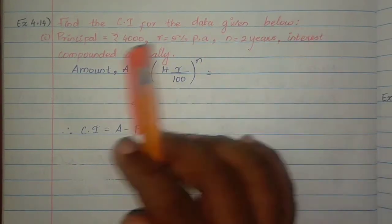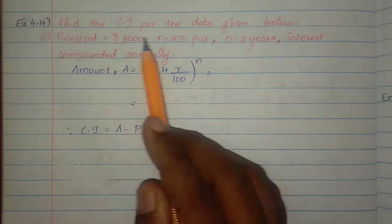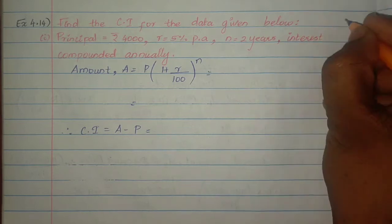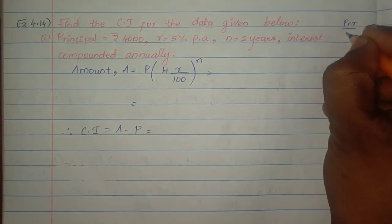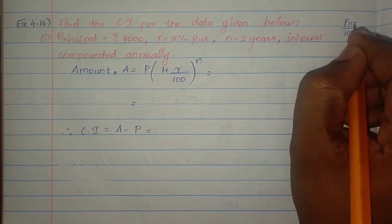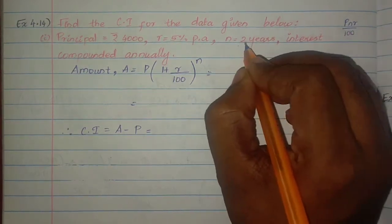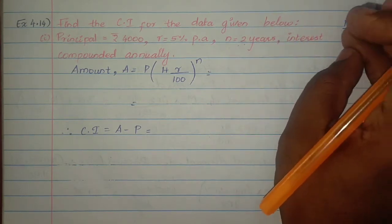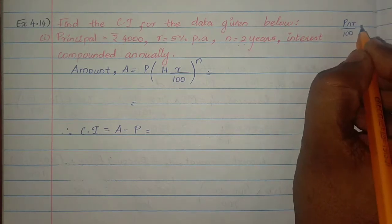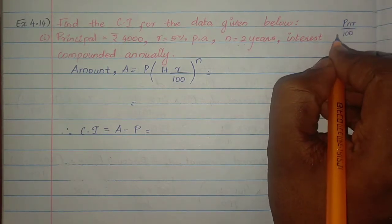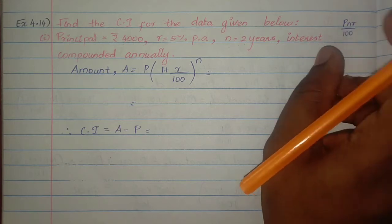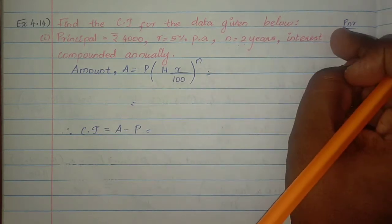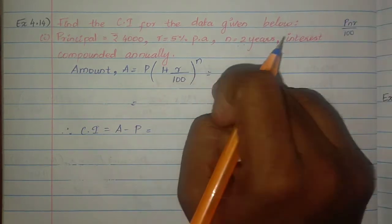Find the compound interest for the data given below. First, compound interest and simple interest are different. Simple interest is PNR by 100, where N is the number of years. For compound interest, the compounding can be done annually, quarterly, or half yearly.